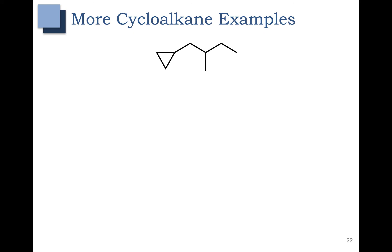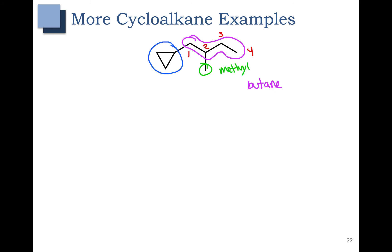Here are a few more examples. In this first one the parent chain is 4 carbons long. It's important to recognize that the cyclopropyl group here is not part of the parent chain. We're going to start numbering our parent chain at 1. That means we have a butane with a methyl group at position 2 and a cyclopropyl group at position 1. Put this all together and we get 1-cyclopropyl-2-methylbutane.